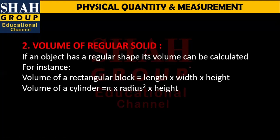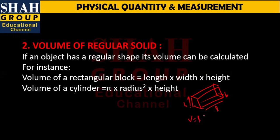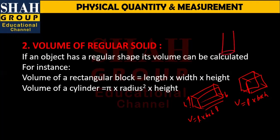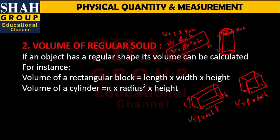For a regular solid — for example, a rectangular block — if we take length, breadth, and height, the volume is length × breadth × height, found using a mathematical formula. For a cube, the volume is similarly length × breadth × height. For a cylinder, the volume is π r² h — where r is the radius and h is the height.